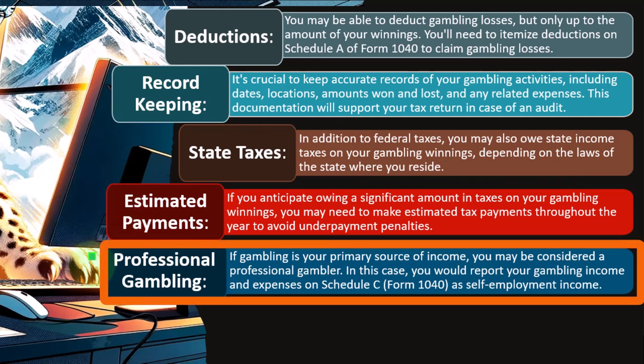Professional gambling: if gambling is your primary source of income, you may be considered a professional gambler, in which case you would report your gambling income on a Schedule C.